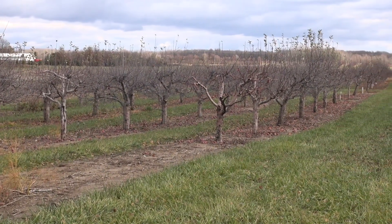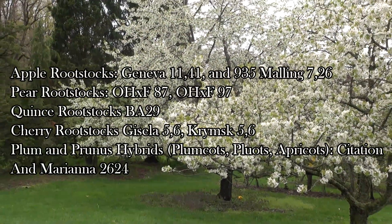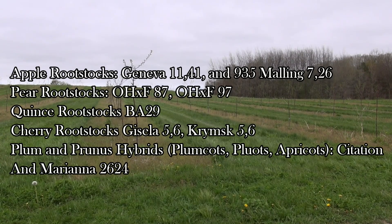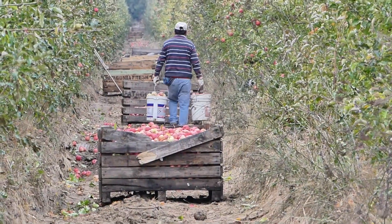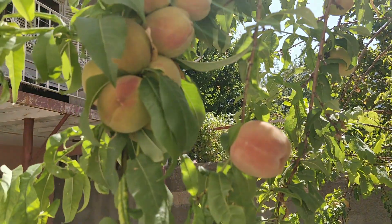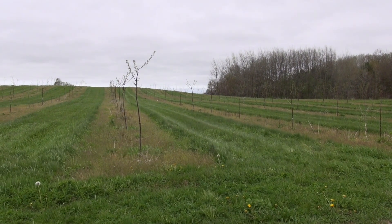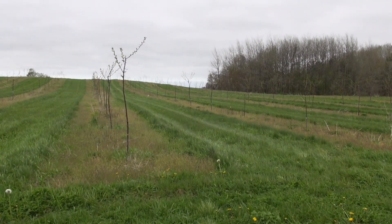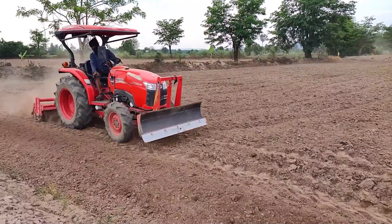Another strategy is to choose trees grafted onto disease-resistant or tolerant rootstocks. This is vital for establishing healthy orchards in replant soils. While ORD is commonly associated with apples, stone fruits like peaches can also be affected. Planting peaches in soil previously occupied by apples may pose fewer challenges than replanting peaches after peaches, but careful soil preparation and management are still essential.